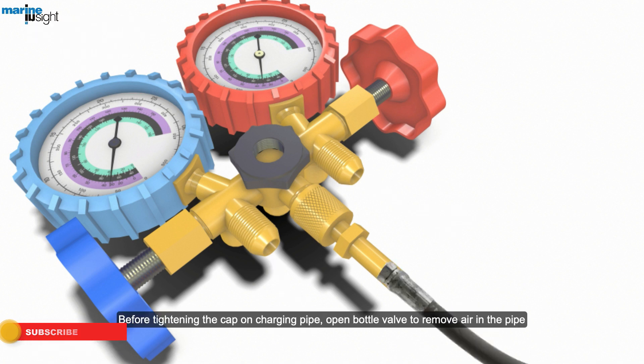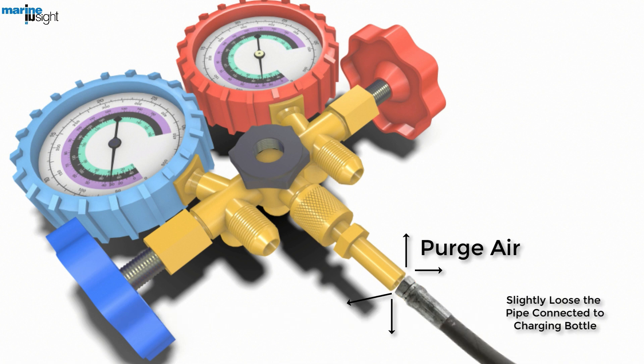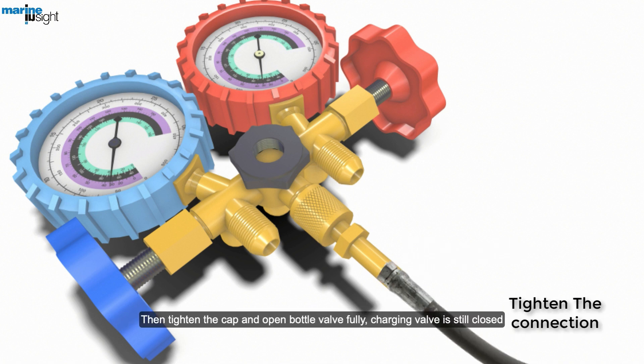Before tightening the cap on the charging pipe, open the bottle valve to remove air in the pipe. Then tighten the cap and bottle valve fully. The charging valve is still closed.